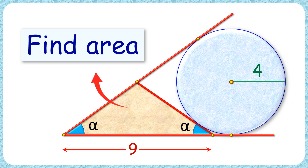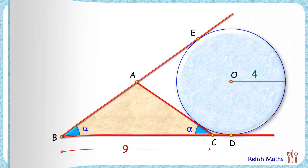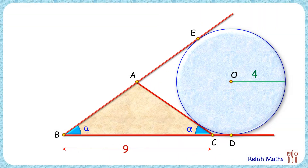Let's check the solution. From vertex A, let's drop a perpendicular on base BC. We know that in an isosceles triangle, the altitude is also the angle bisector, and thus these two angles will be equal. So if this angle is beta degrees, this will also be beta degrees.